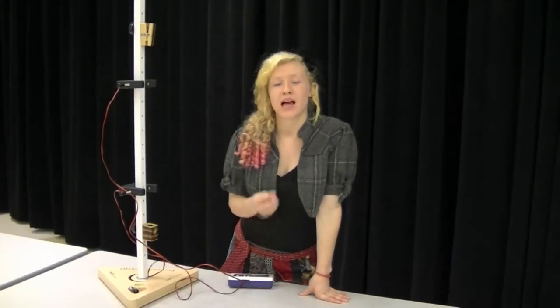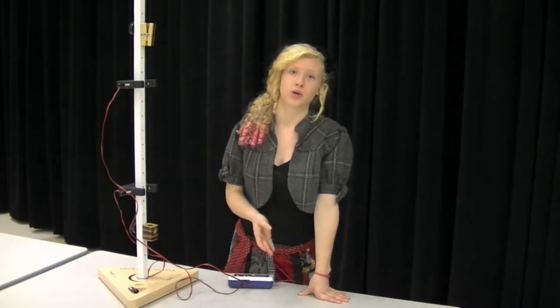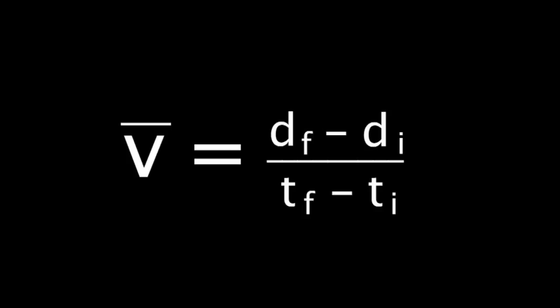Also during this lab, we're going to utilize three equations that we should be familiar with. Now these equations are v bar equals d final minus d initial over t final minus t initial. We also have acceleration, which is g, equals v final minus v initial over t, which then equals gt plus v initial equals v final. And our final equation will be distance equals 1 half at squared plus vit.